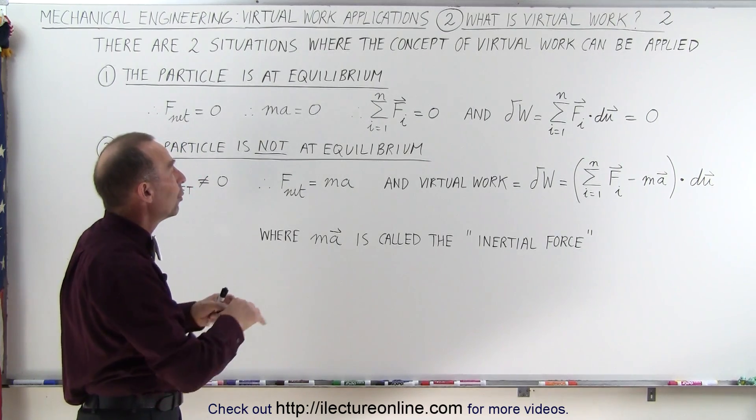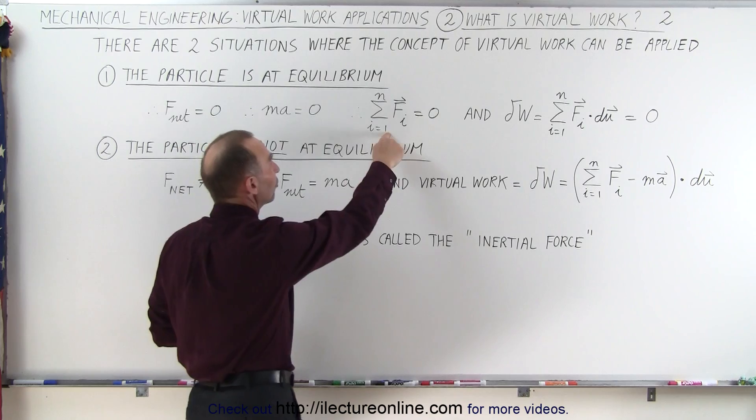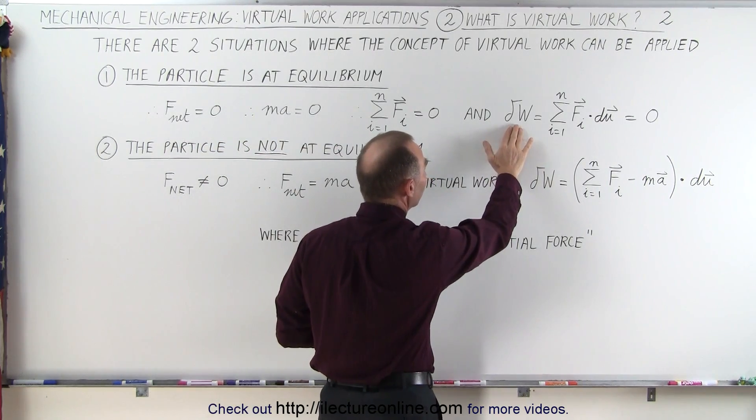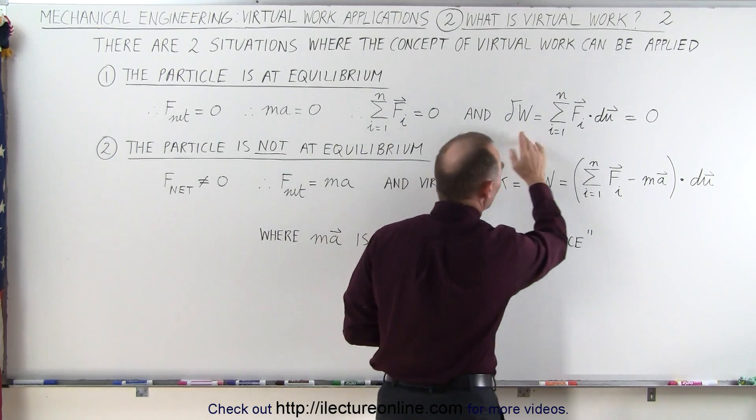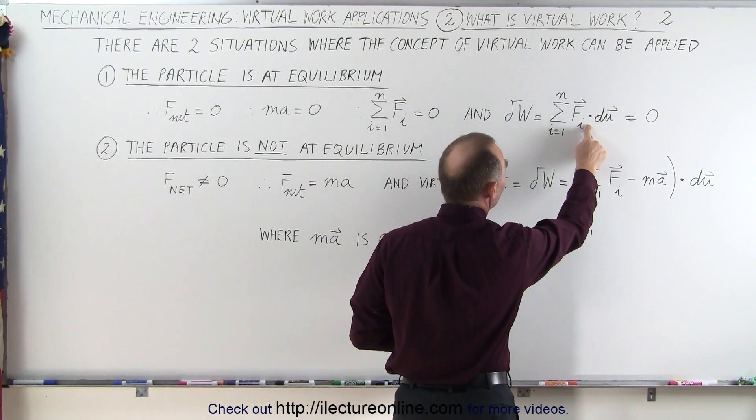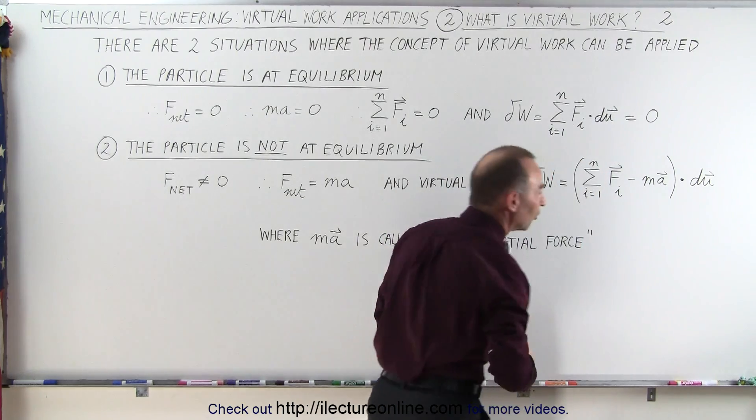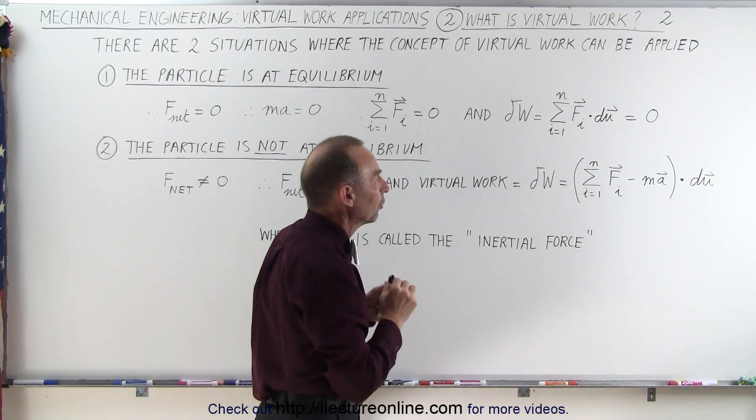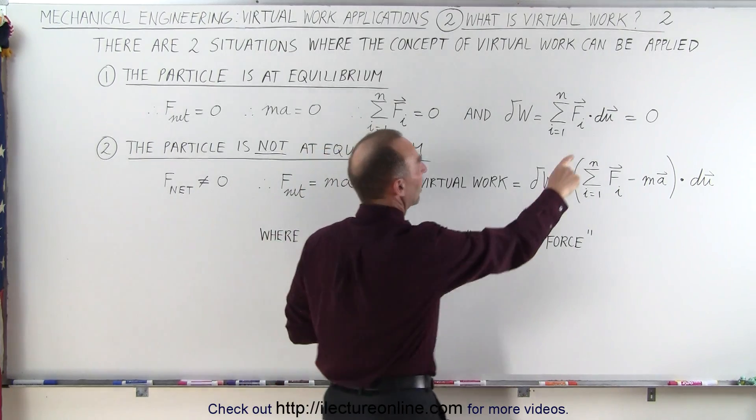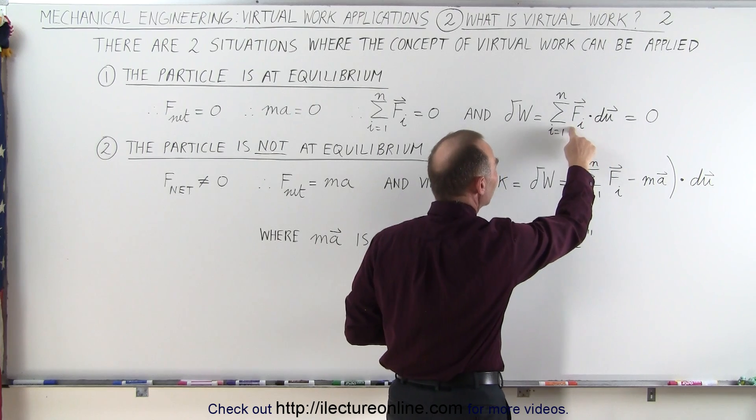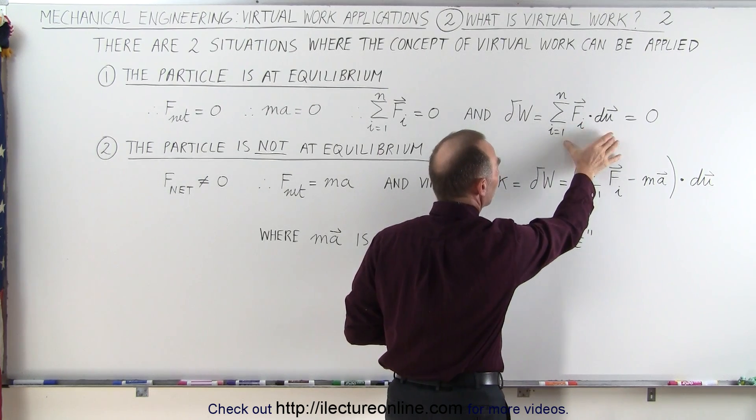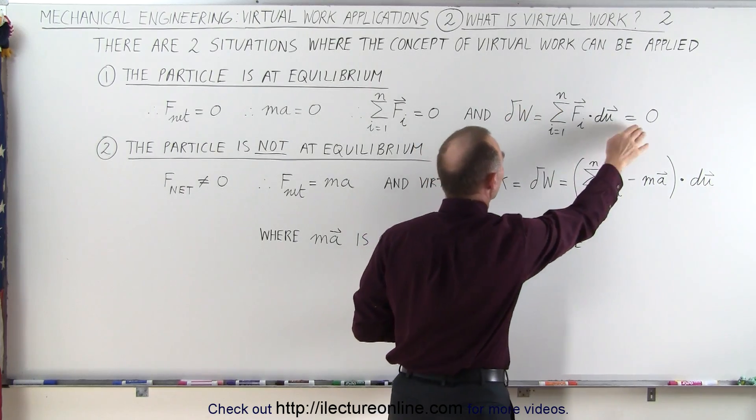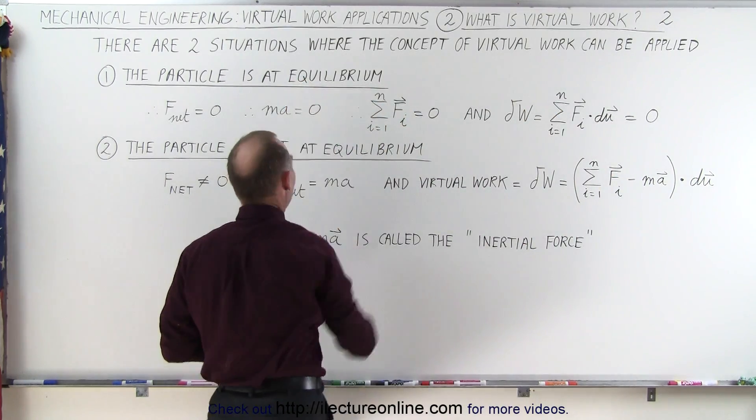whatever system we may be looking at, we can assume that if we add up all the forces, they should add up to zero, and therefore we can say that the virtual work done, the delta w, is equal to the sum of all the forces multiplied by a small imaginary distance that we're going to allow the particle or the system to move through. In other words, if we do a dot product between the imaginary displacement and each of the forces acting on the particle, when we sum them all up, that should equal zero. Which means that the virtual work is equal to zero when the particle is at equilibrium.